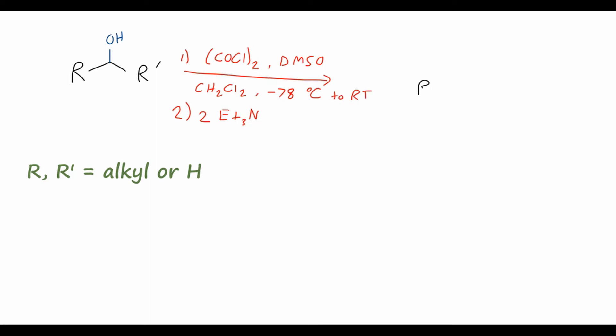And as this reaction is an oxidation, we will end up with the oxidized product, where we have now a ketone, or if either R or R' is a hydrogen in this case, we will have the aldehyde. However, we do get a few byproducts. So first of all, we have dimethyl sulfide, carbon monoxide, carbon dioxide, and two equivalents of triethylamine chloride. So quite a few byproducts, and we will discuss that a little bit later in the video.